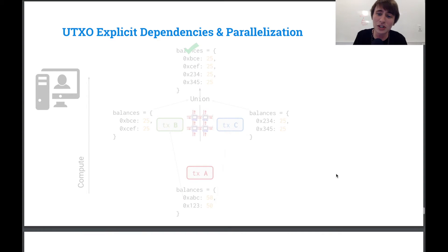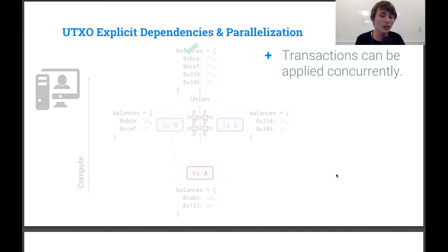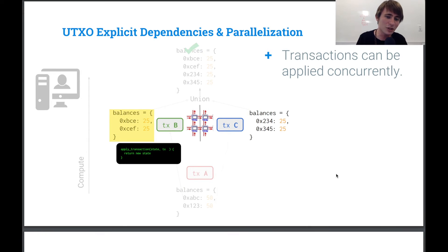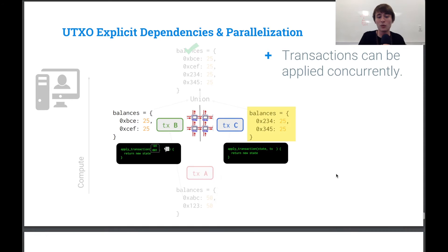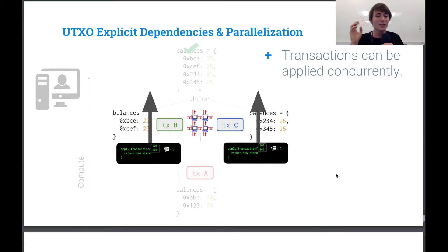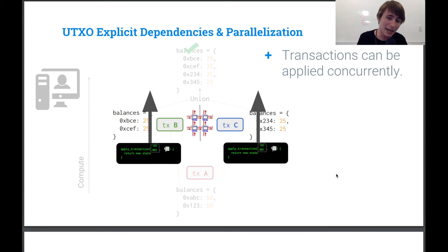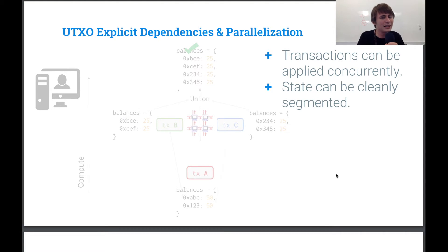So what does this actually mean? Well, it means that these transactions can be applied concurrently. So in transaction B land, we can say, okay, apply transaction. And we're going to supply a subsection of the full state. And we'll apply the transaction. And we'll do the same for transaction C. And so we don't actually need to do these one after another, we can do them just simultaneously, and then union the results together.